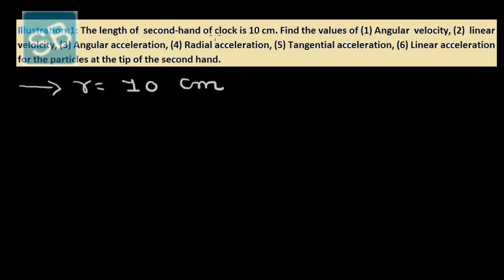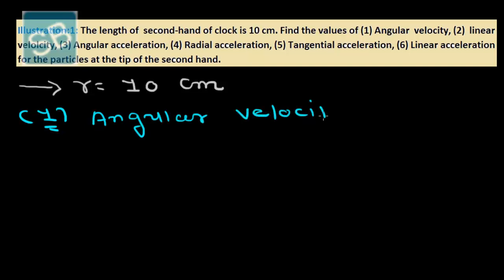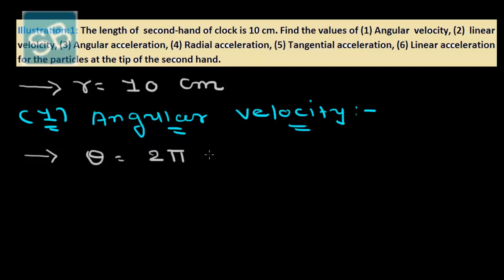We have to find out the angular velocity. The second hand makes an angular displacement of 2π radians, so dθ equals 2π radians in 1 minute.